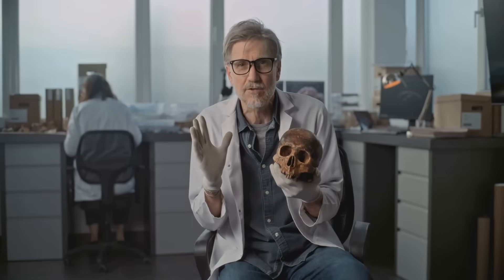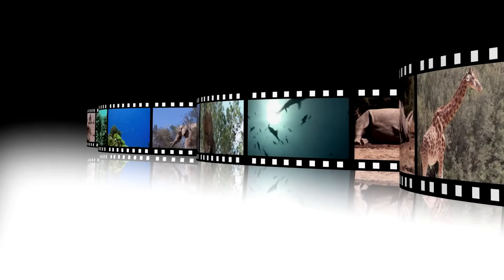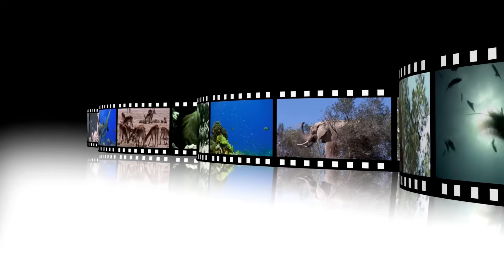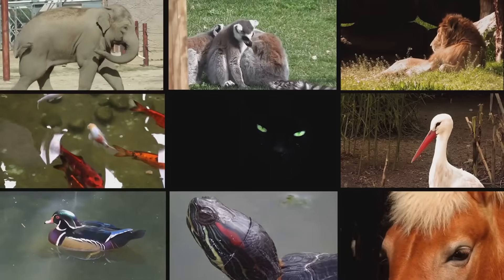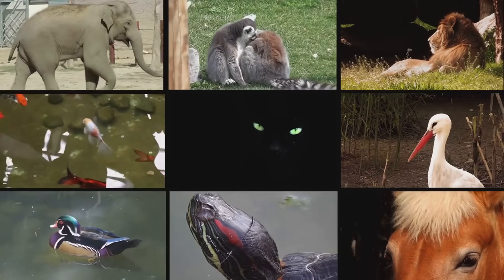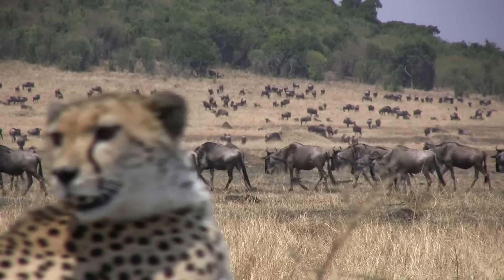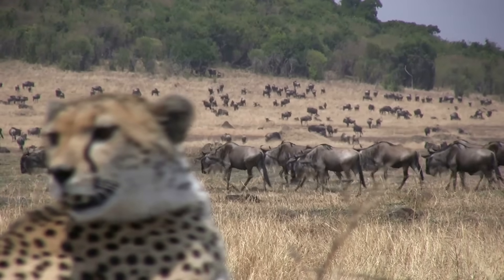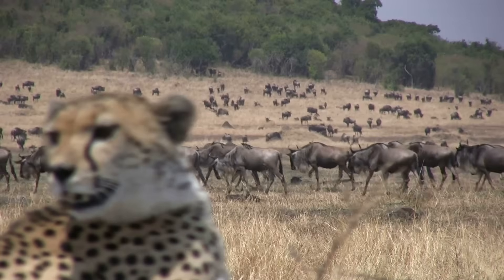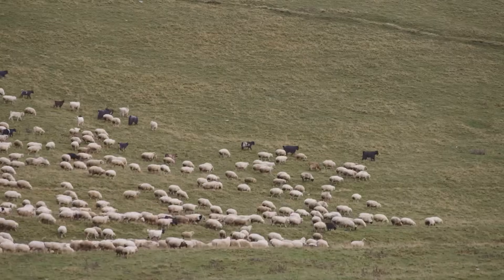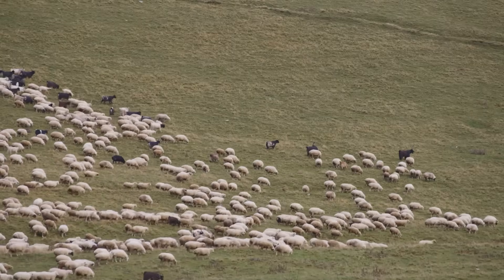While natural selection is perhaps the most well-known mechanism of evolution, it is not the only one. Several processes work together to shape the diversity of life. Natural selection, often paraphrased as survival of the fittest, is the process by which organisms with traits better suited to their environment are more likely to survive and reproduce. Over time, these advantageous traits become more common in the population.